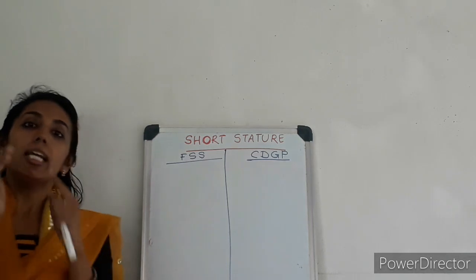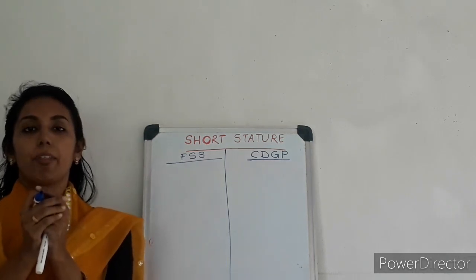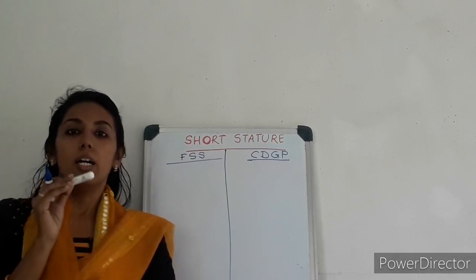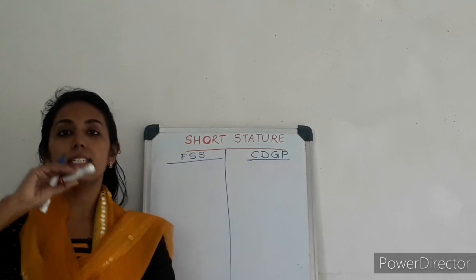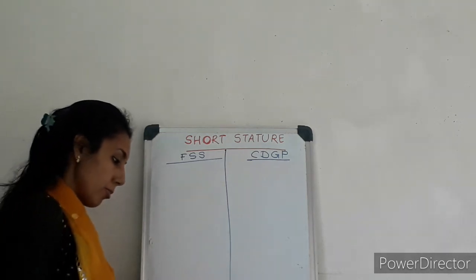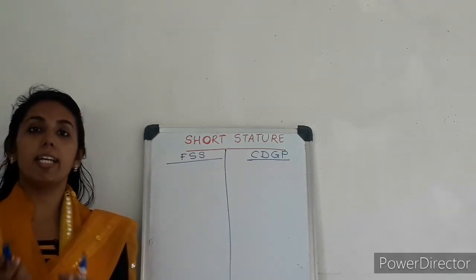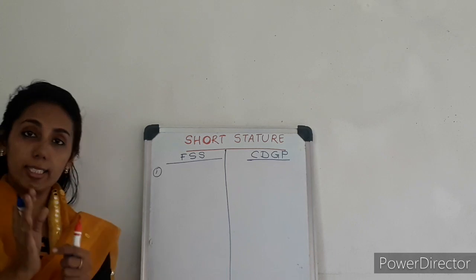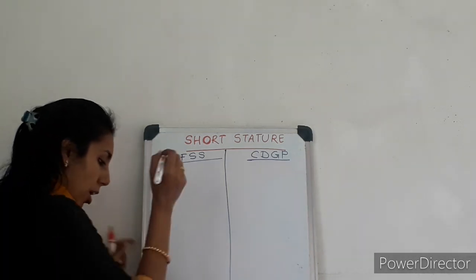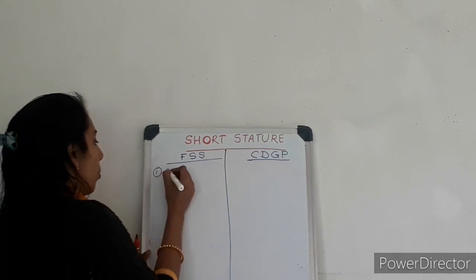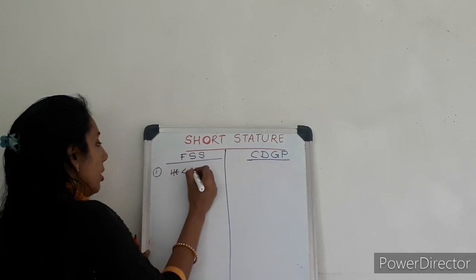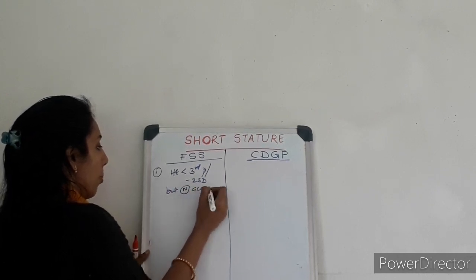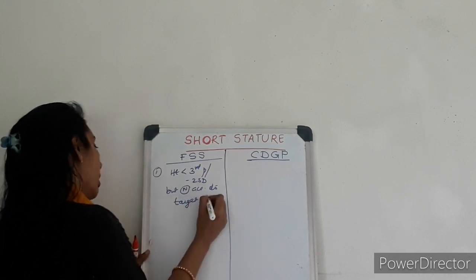Why are they called normal variants? Because they actually are in their target height range. In familial short stature, these are the normal variants of proportionate short stature — because although they are short, they are in the same trajectory as their final target height. As per their target height, the child is normal. So in familial short stature: height is less than third percentile or less than minus 2 standard deviation, but normal according to target height.